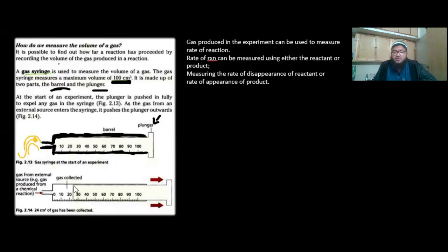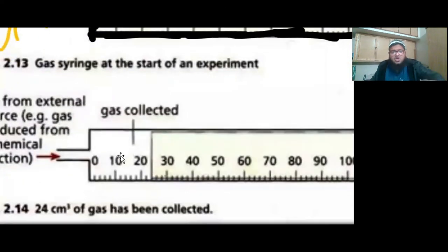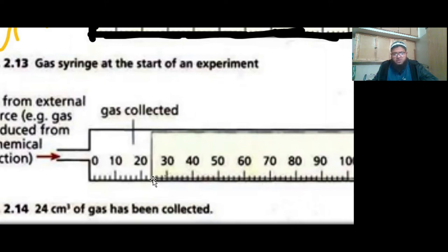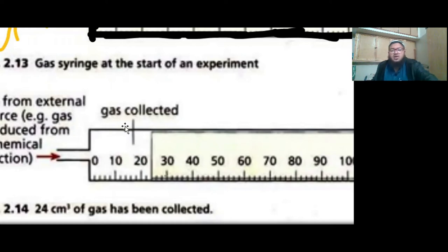Then you connect the delivery tube to the gas syringe and allow the reaction to proceed. The gas produced in the reaction is brought to the mouth of the gas syringe via the delivery tube. As soon as the gas enters, the gas pressure pushes against the plunger and pushes it out, as indicated by the red arrows. The gas gets collected in the space created, and this way we can measure the volume of the gas collected. Zooming in on the diagram, you can see the readings — currently 24 cm³ of gas has been collected.